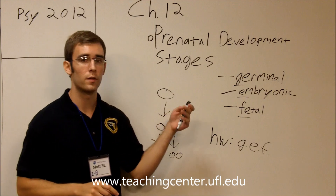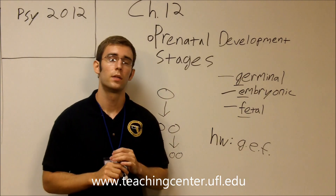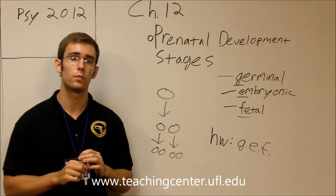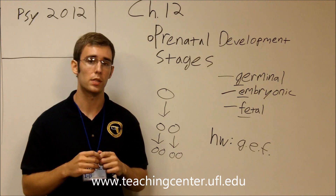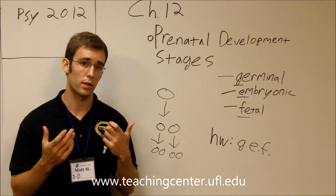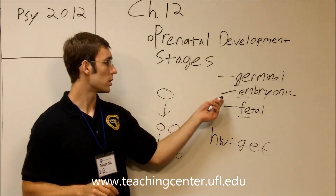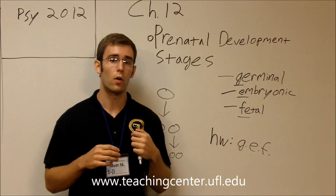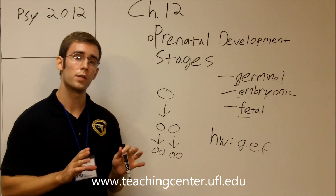After about two weeks, we enter into the embryonic stage. The embryonic stage is a critical period of development, where the embryo is especially sensitive to teratogens — those are birth defect-causing agents. This period involves the development of organs and lasts for about two months.